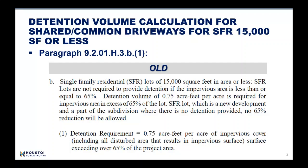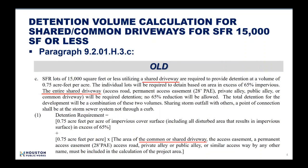Previously, in the detention calculation for single-family residential lots of 15,000 square feet or less with a shared or common driveway in Section 9.2.01.H.3B1, any proposed shared or common driveway could not be part of the impervious area calculation to get a 65% reduction. They had two separated calculations — to calculate detention as required in another paragraph, which is 9.2.01.H.3B1.